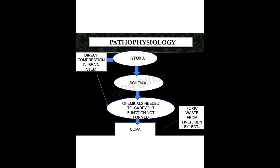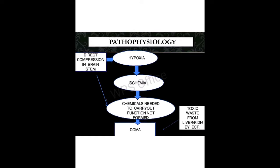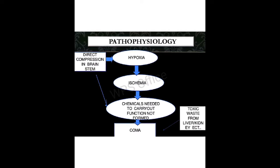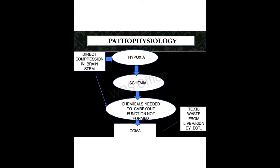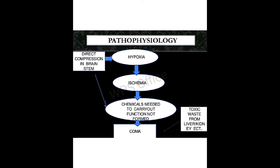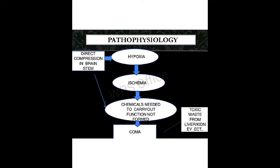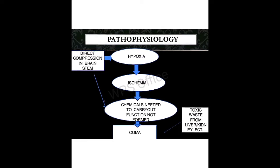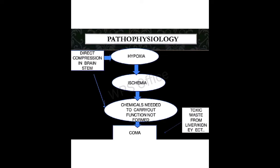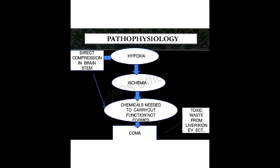In the pathophysiology, due to the etiological factors or risk factors, there will be direct compression of the brain stem, causing hypoxia — meaning no oxygen supply inside the brain cells. Due to this hypoxia, there will be ischemia, meaning a decreased level of oxygen in the blood. As a result, the chemicals needed to carry out body functions will not be formed, leading to unconsciousness.